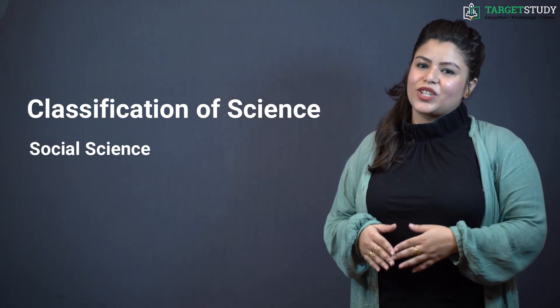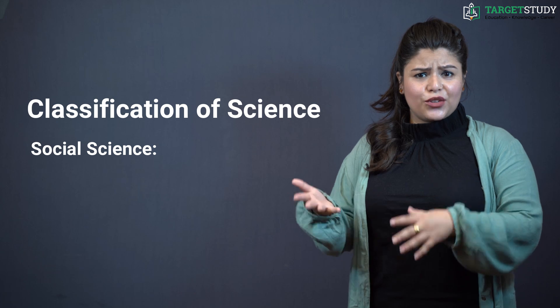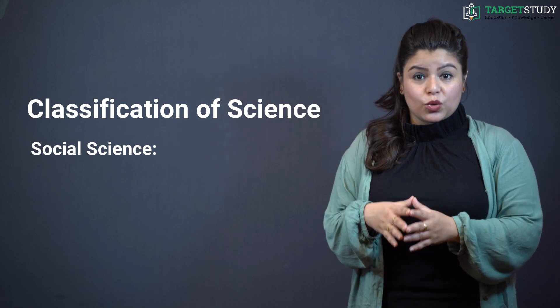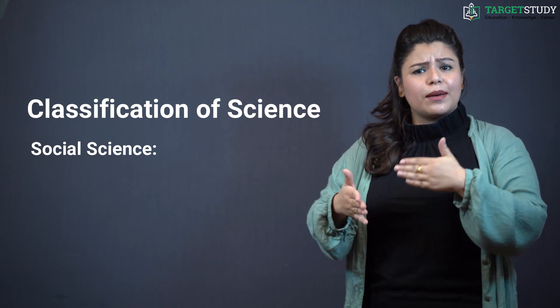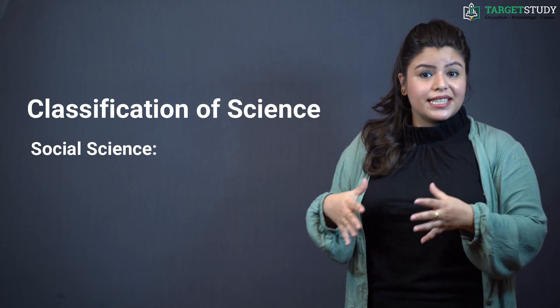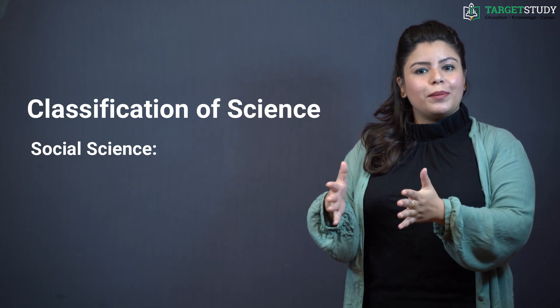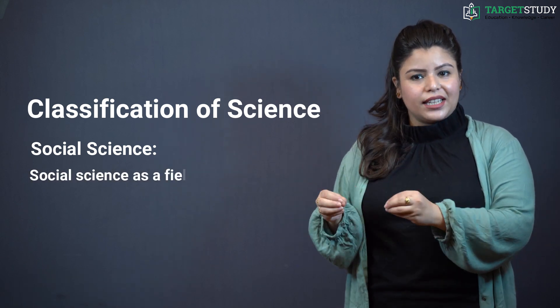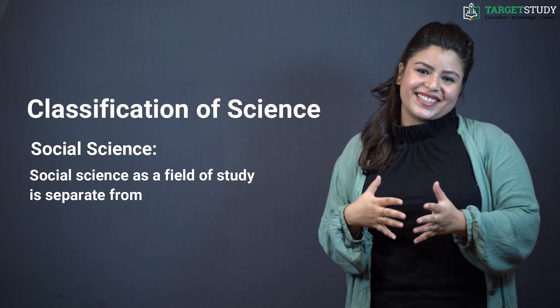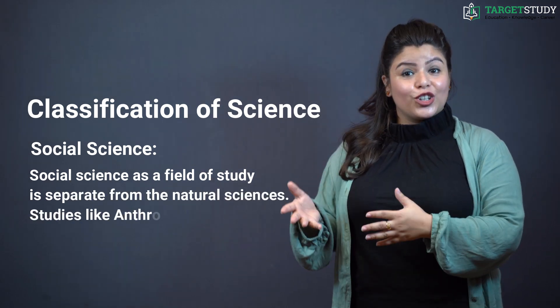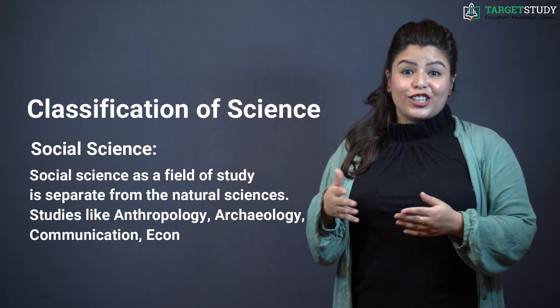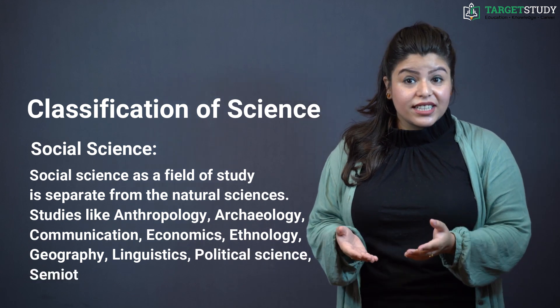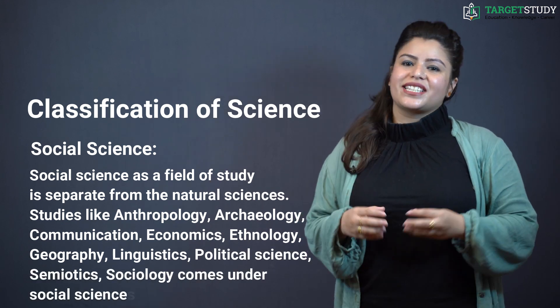The another branch of science is social science. Social science generally deals with scientific study of human society and social relationships. Social science also has many subtypes of studies which are a group of academic disciplines that examine society and how people interact and develop as a culture. Social science as a field of study is separate from natural sciences. Studies like Anthropology, Archaeology, Communication, Economics, Ethnology, Geography, Linguistics, Political Science, Semiotics, Sociology, they all come under social sciences.